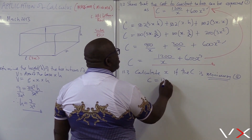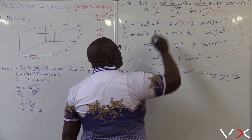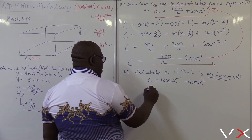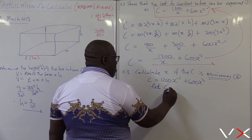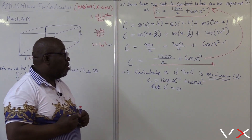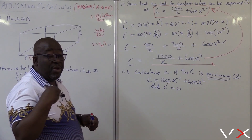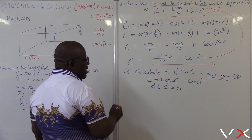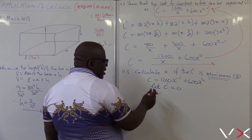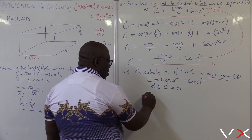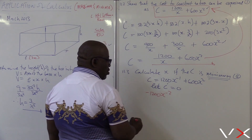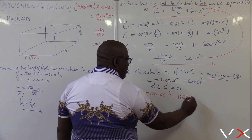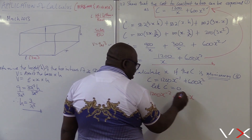Is it arranged in the form of x to the power n? No, it is not. I will need to arrange it first before I differentiate. So my cost is in actual fact equal to 1,200 x to the power minus 1 plus 600x squared. Then let cost prime be equal to zero — the derivative equal to zero — because at minimum there is no gradient. The gradient is zero at minimum, and when we differentiate, that's when we're looking for the gradient.